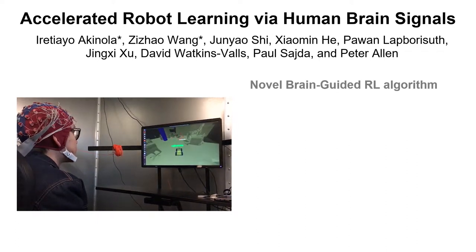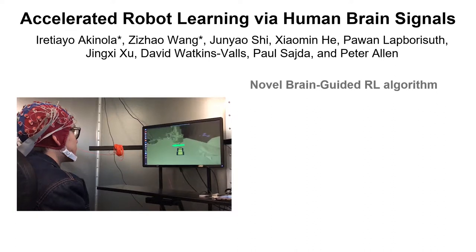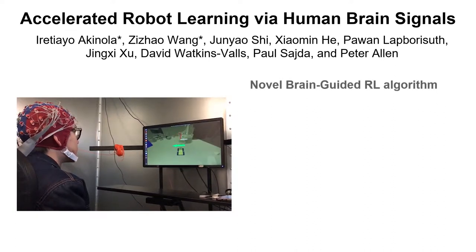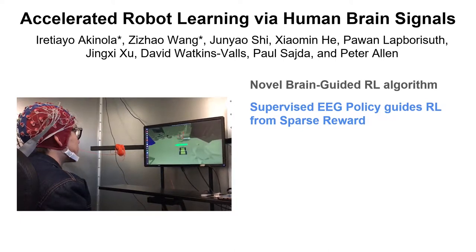Most RL algorithms struggle to learn from sparse reward. In this work, we propose a novel brain-guided RL algorithm that uses feedback decoded from the human brain to accelerate robot learning in sparse reward settings.